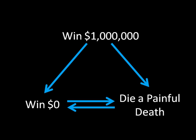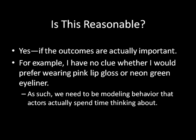To wrap this up, we should talk about whether the completeness preference axiom is reasonable. I think it is, just so long as the outcomes are actually important. For an example of something unimportant, I honestly have no clue whether I would prefer wearing pink lip gloss or neon green eyeliner — that's something I don't really think about, and if I don't think about it, I won't be able to tell you which I prefer, which causes problems when we try to predict behavior. That's different from having indifference — rationality is defined just as a complete and transitive preference relation.